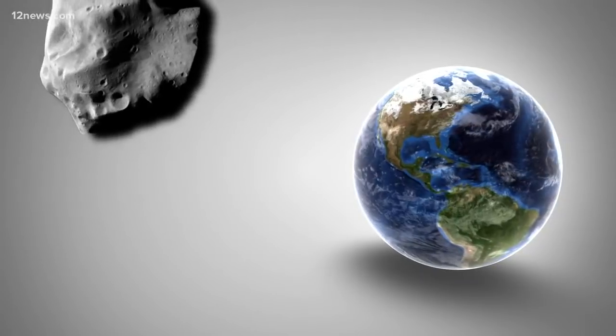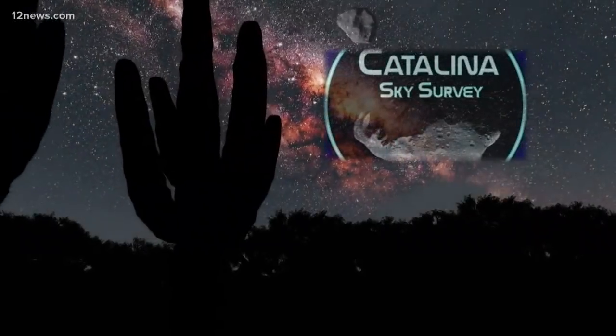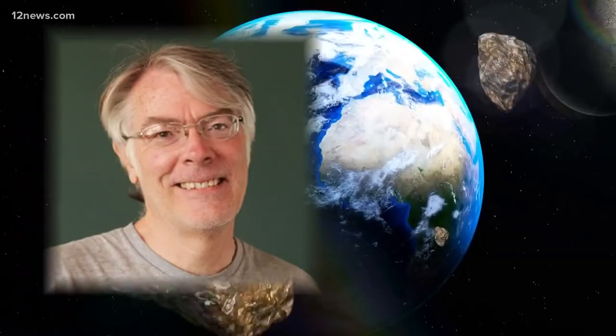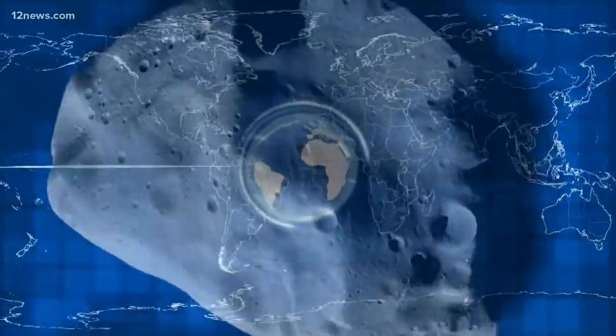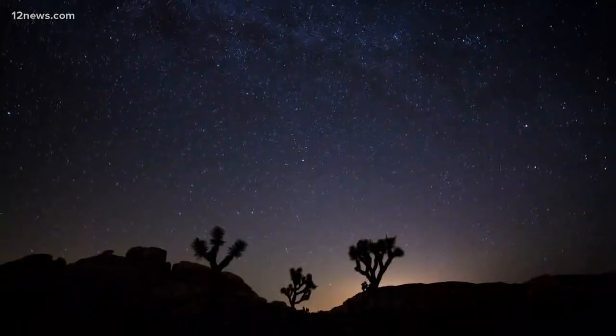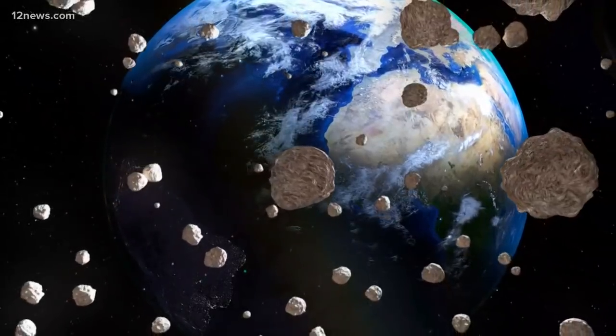The official name is 2010 WC9, and it was first discovered by the Catalina Sky Survey team here in Arizona in 2010. The fact that it's coming back again is interesting enough. This one is making the news, but according to NASA, this will actually be the fourth asteroid to pass between Earth and the moon in the past 30 days.